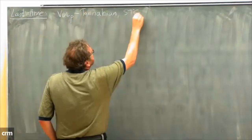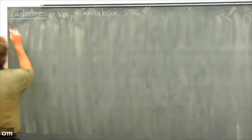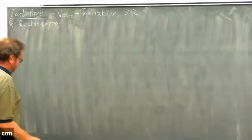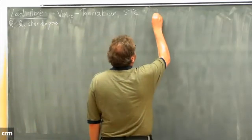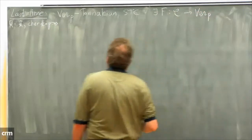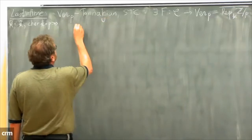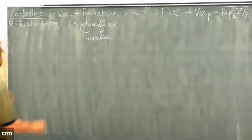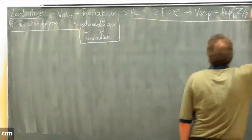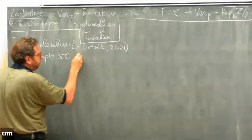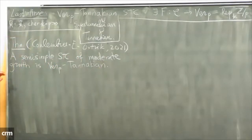Let me recall what we did last time. We defined the notion of a ver-p Tannakian category — a category over a field k which is algebraically closed of positive characteristic p — and this notion means there exists a fiber functor from C to Ver-p, which is the semi-simplification of representations of Z/p. In particular, this contains super-Tannakian and Tannakian categories. I stated a result by Benson-Etingof-Ostrik which says that semi-simple symmetric tensor categories of moderate growth that are ver-p Tannakian we can understand more explicitly.